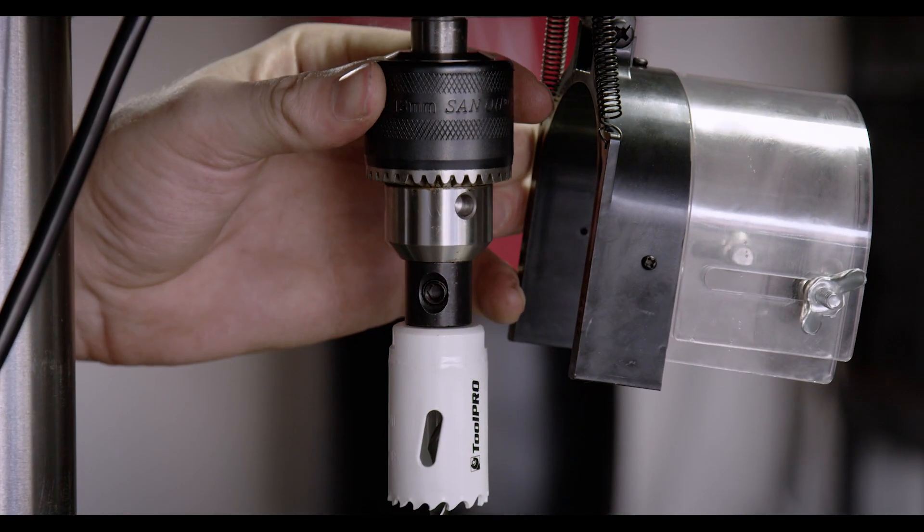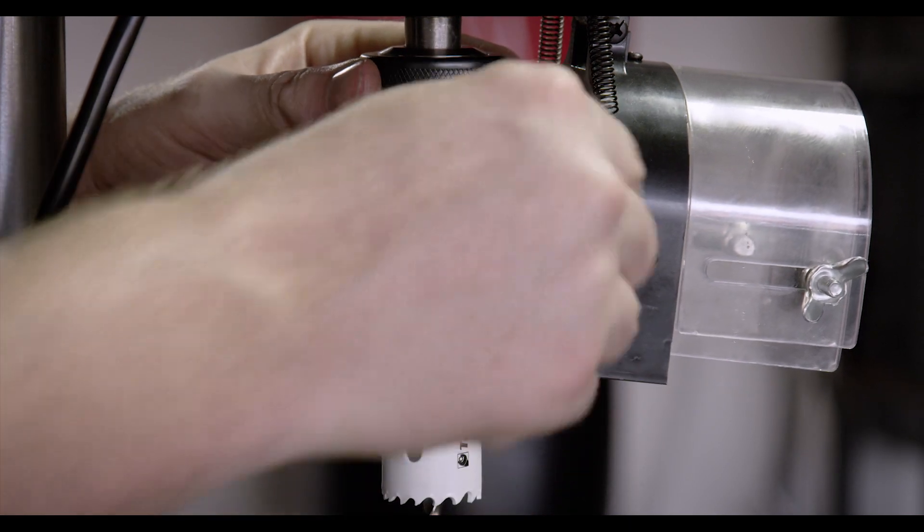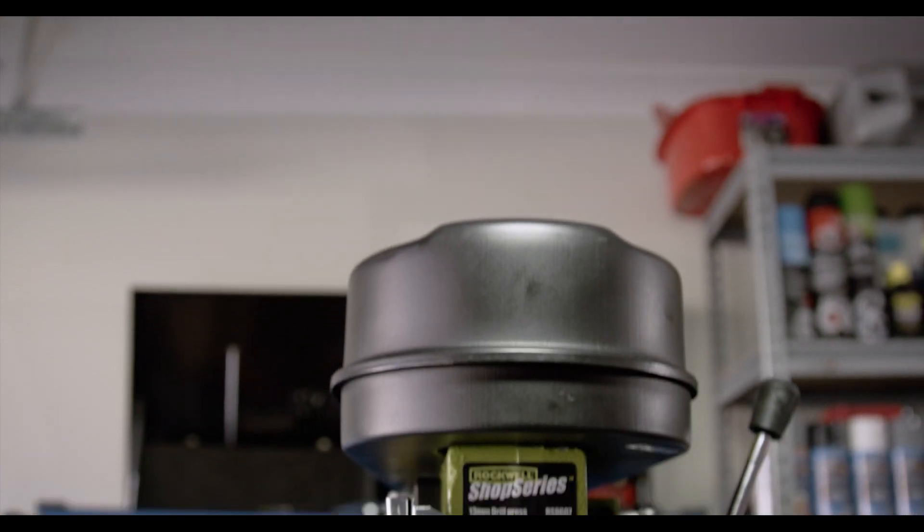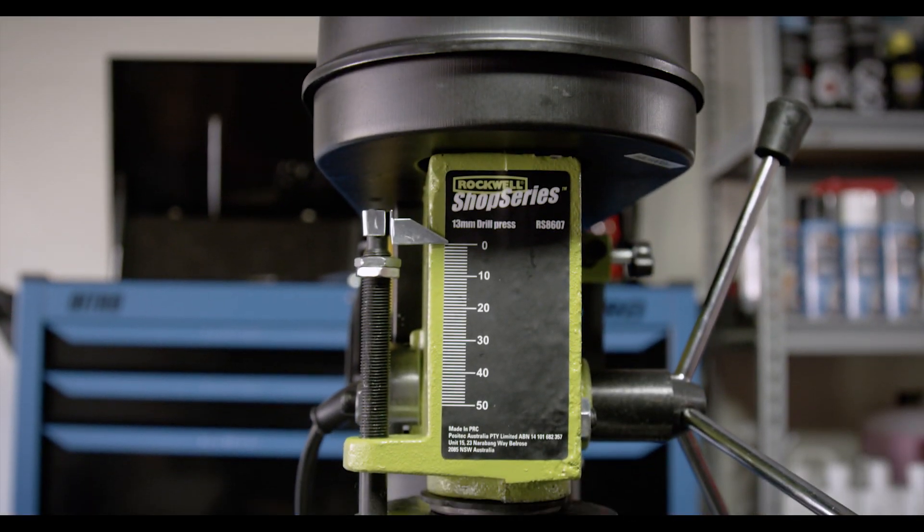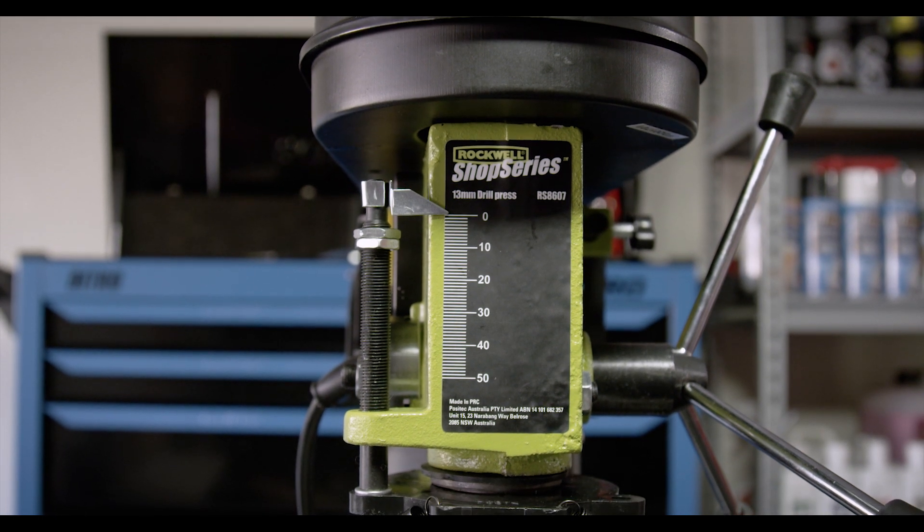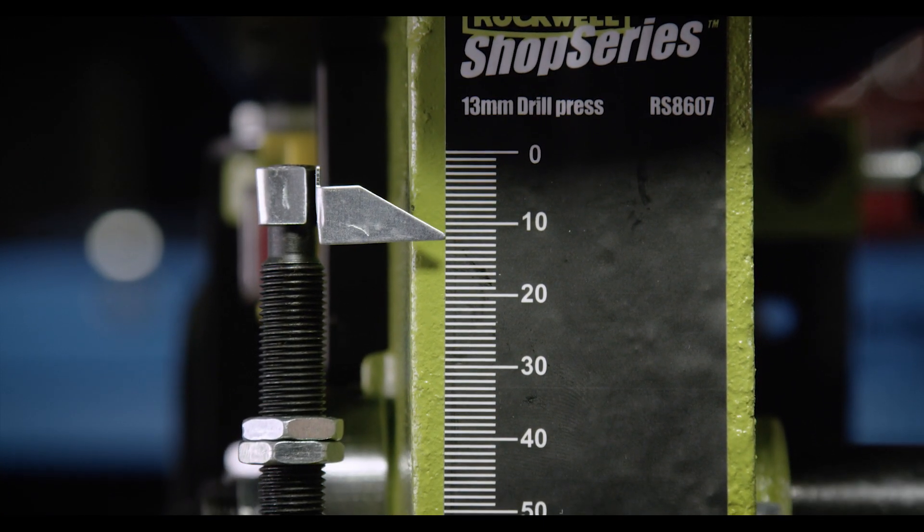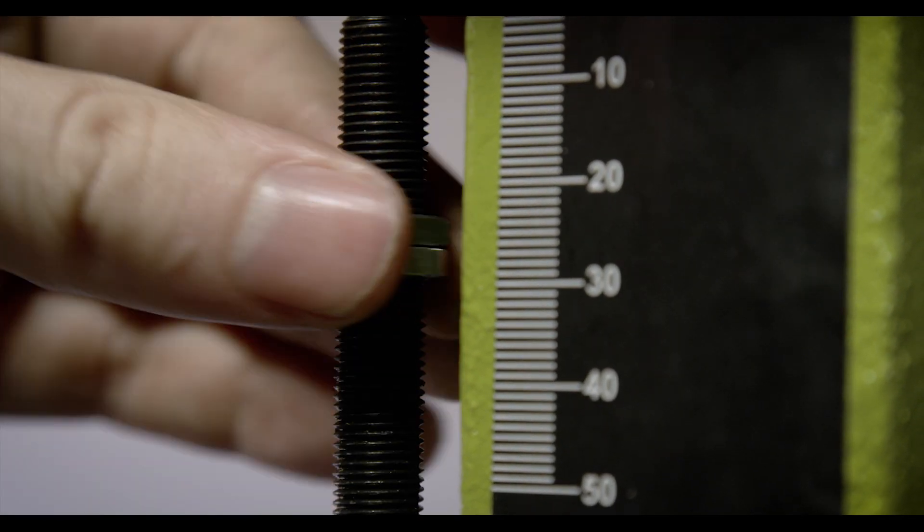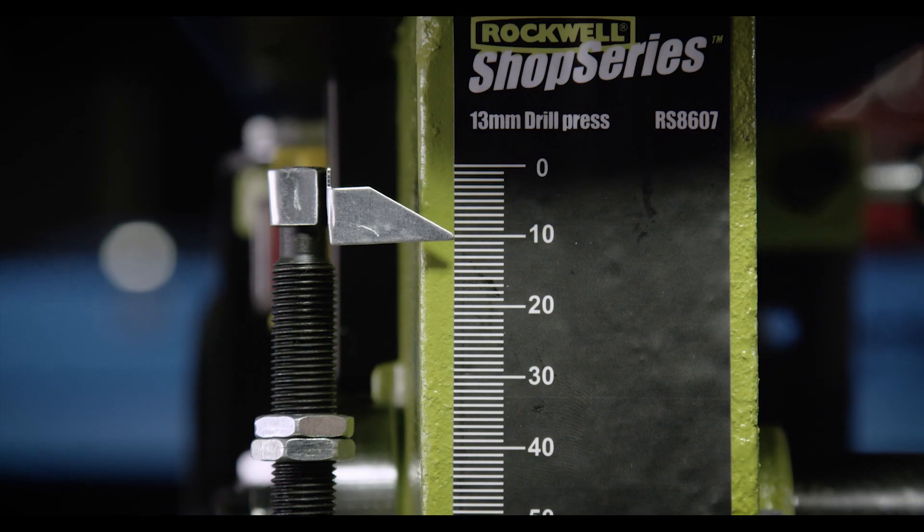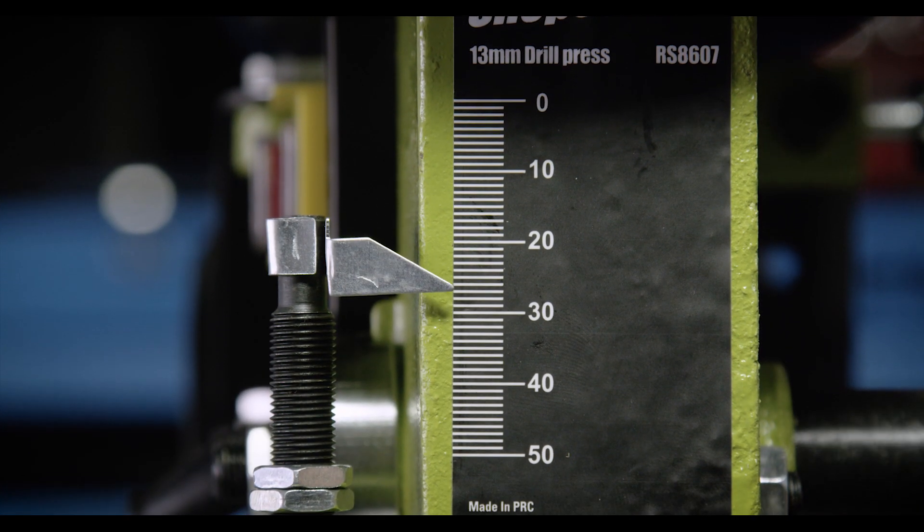If your project requires one or a number of holes to be drilled to a very specific depth, you'll find the depth gauge on the side of the drill press to be a lifesaver. The drill press can either be operated by eye, stopping when the depth gauge reaches the desired measurement, or the locking nuts can be set to the desired depth, ensuring the drill bit won't go any deeper.